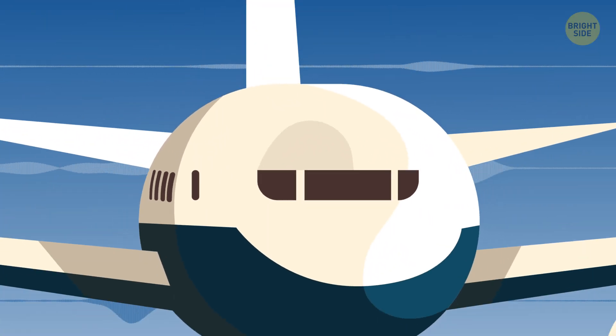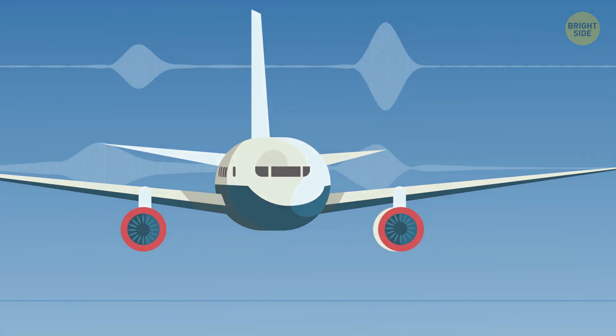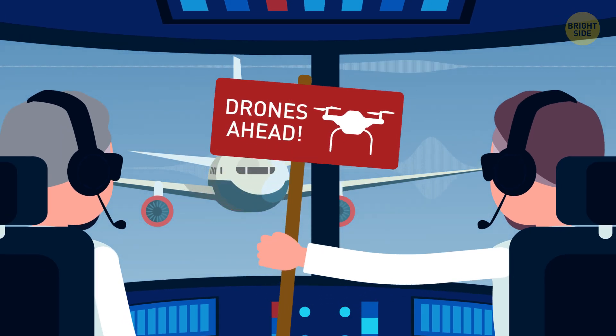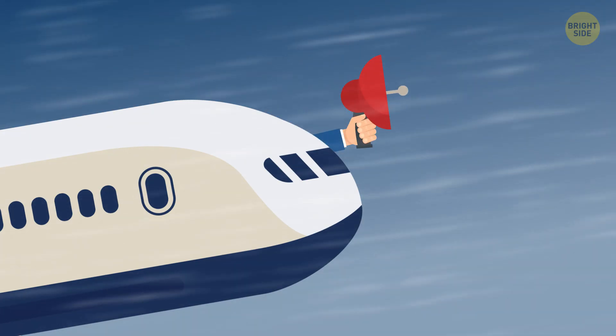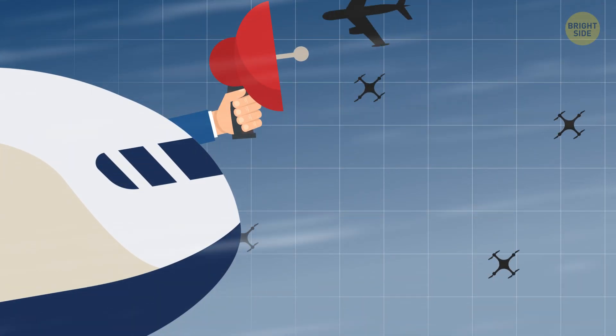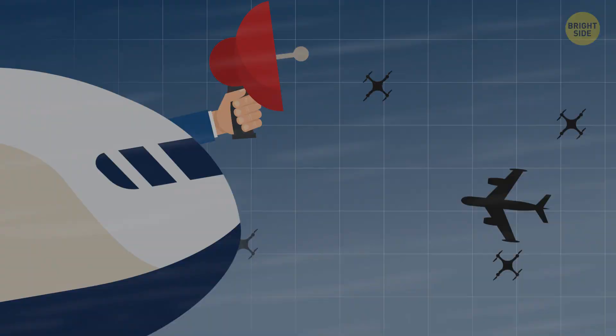Besides, these days, pilots of big commercial airplanes can use automated systems that let them communicate with each other and inform them about potential dangers. Using only eyesight to control a plane has become outdated. Plus, pilots certainly don't have time to waste trying to locate small flying objects approaching their aircraft.